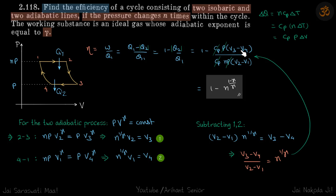So we put that here. This becomes n to the power 1 by gamma upon this n, which gives our efficiency to be 1 minus n to the power 1 minus gamma by gamma.